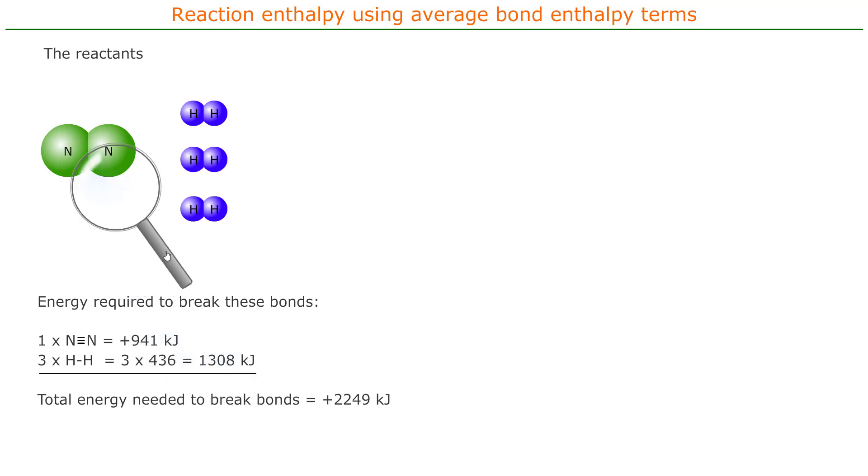So the total energy is the energy of the hydrogen, sorry, the three hydrogens and the nitrogen molecules. The total energy needed to break all of those bonds is 2249 kilojoules.